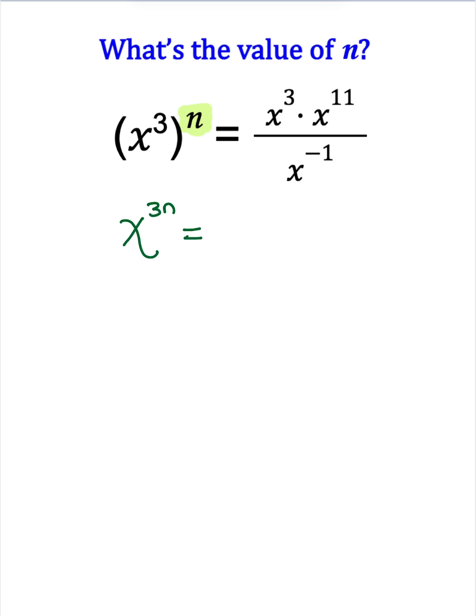On the right side, I have a couple of different rules going on. I have multiplication, and I have the same base. And so in this case, I'm allowed to keep that base and add these exponents to give me x to the 14th power in the numerator.